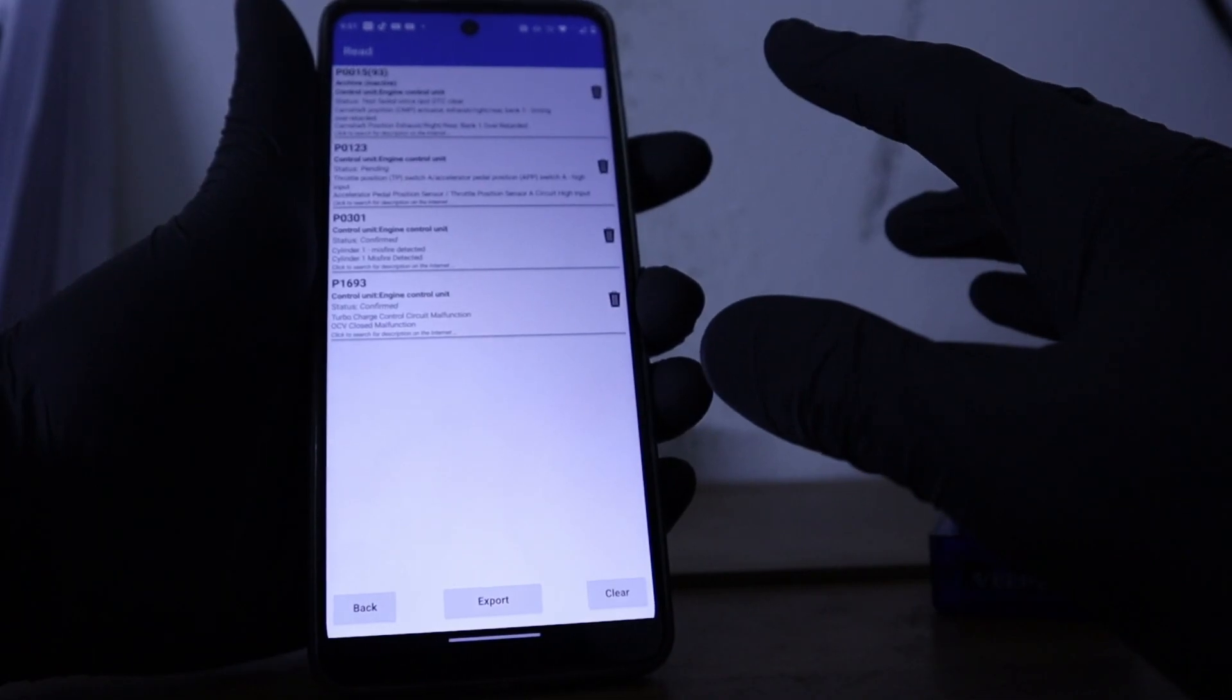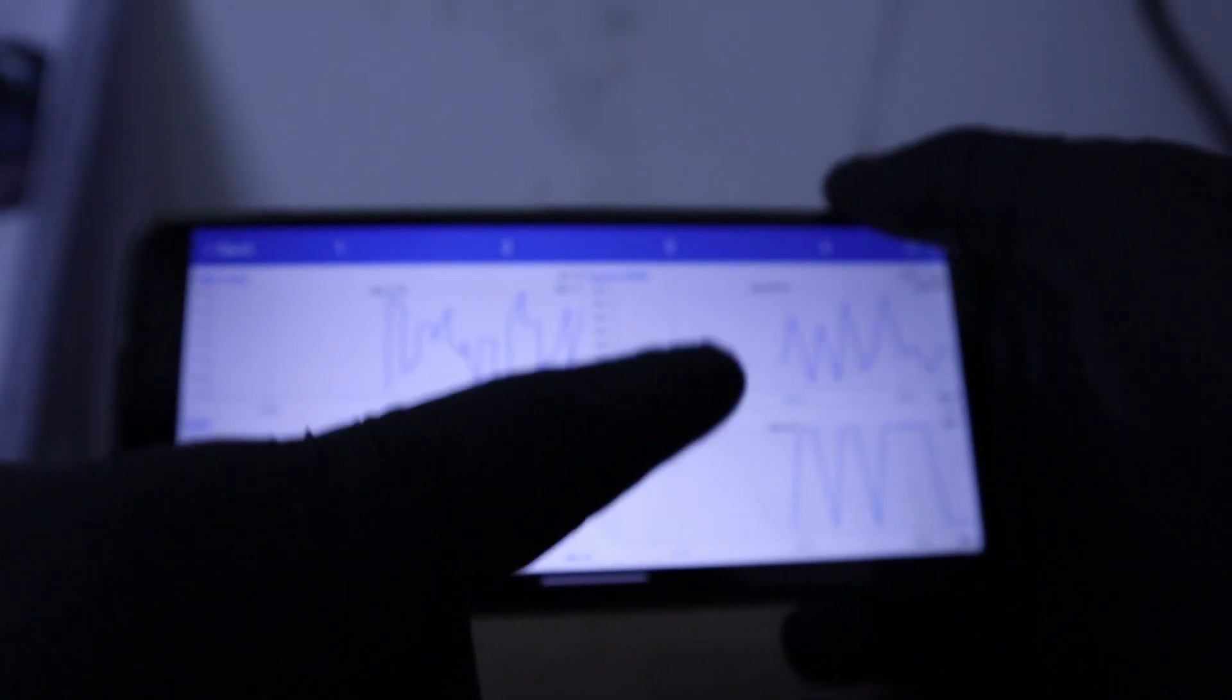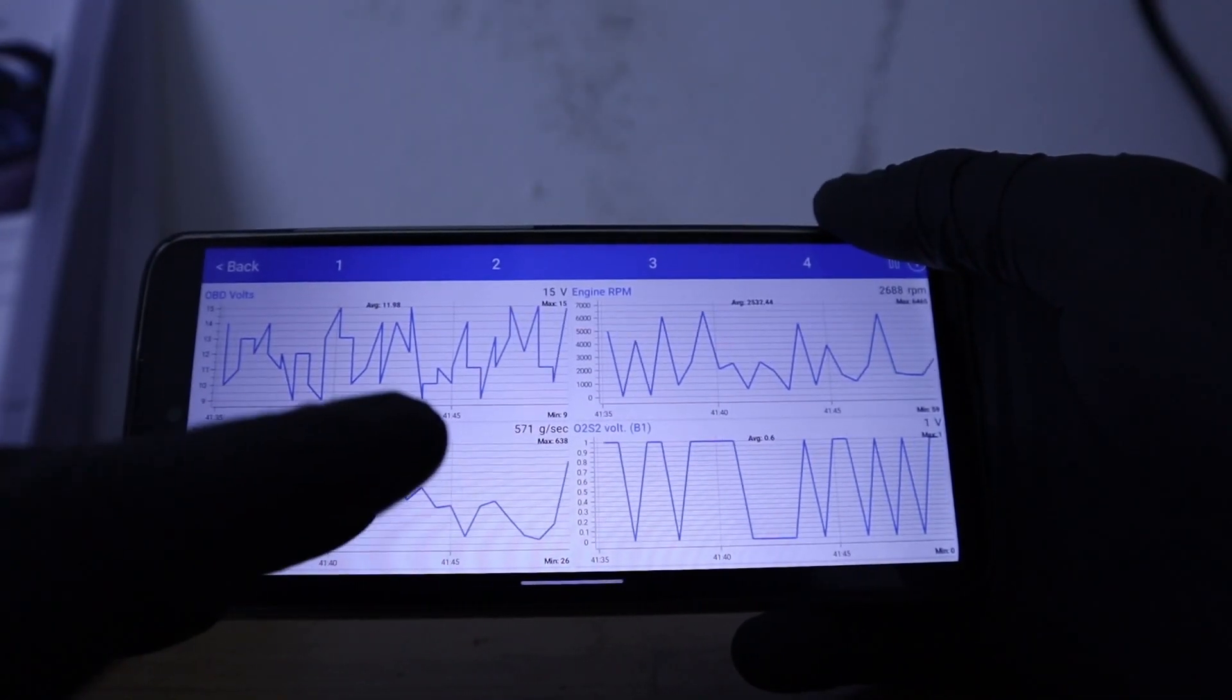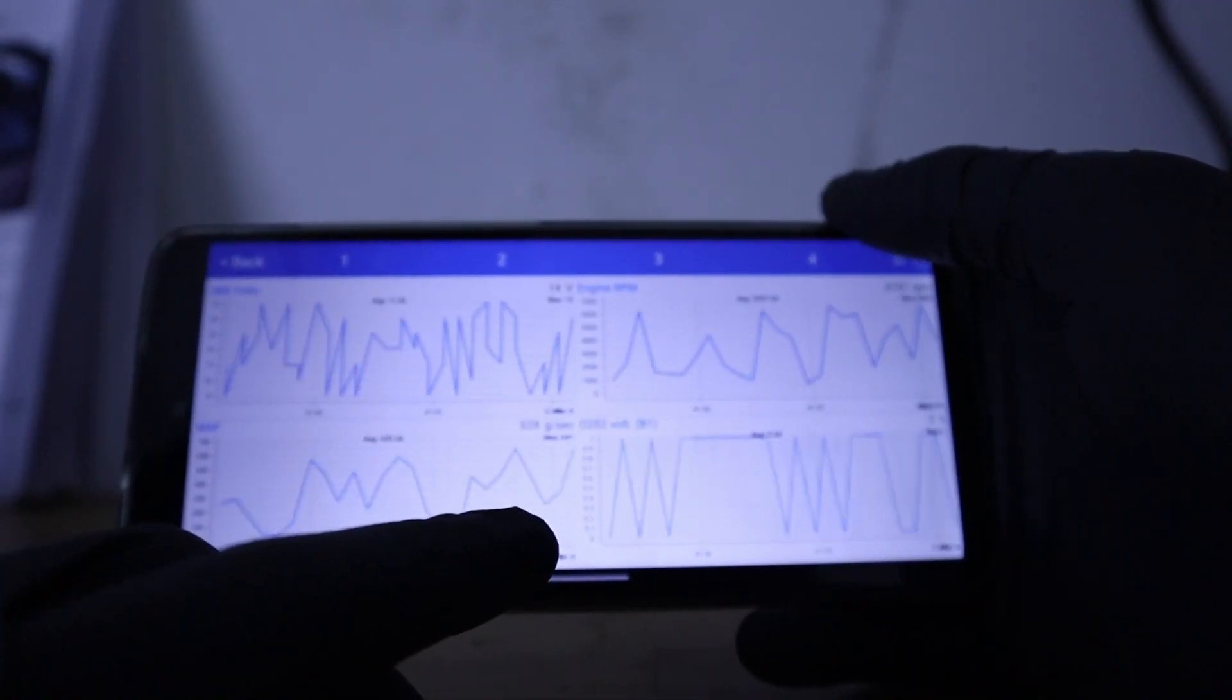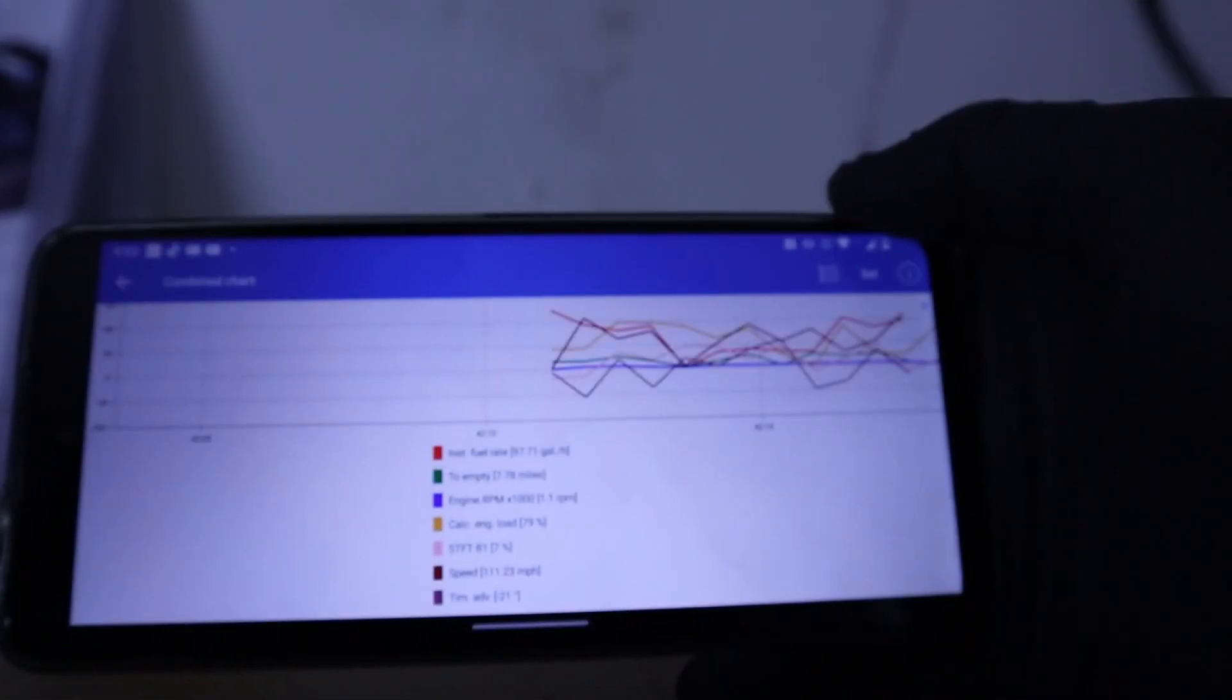You can read live data from your engine and you can display 4 different live data graphs at once. There are some $200 tools that don't have this feature or they only show one graph. Here you can look at 4 different graphs at once or watch different values in the same graph together.